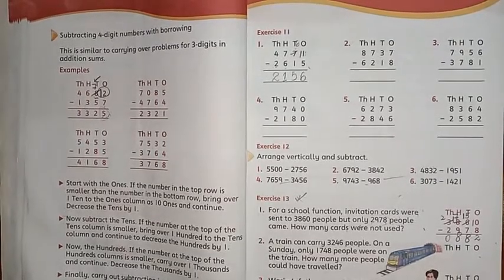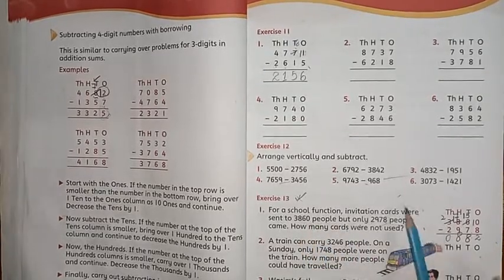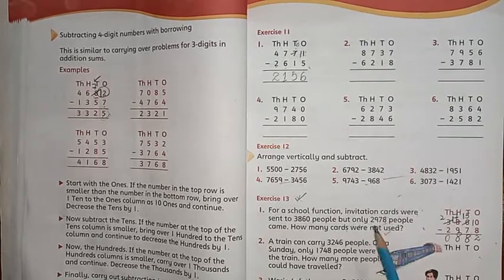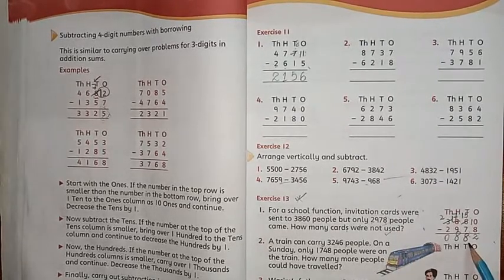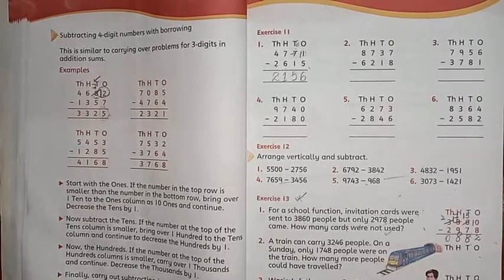Now, it is written or not written. So, how many school cards distributed? 3860. There were 2,978 cards. So, people came in. But, how many people didn't come in this function? 882. So, we have to do this.